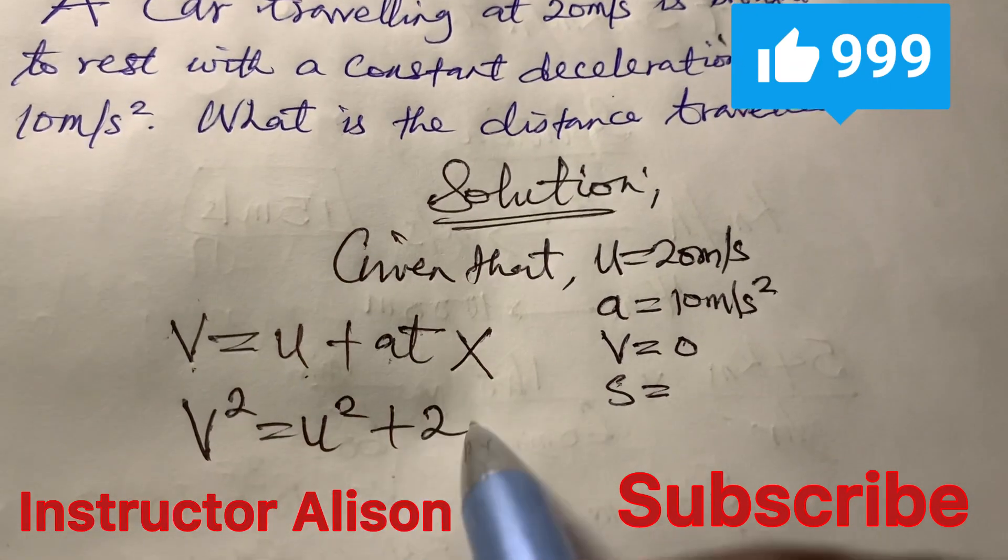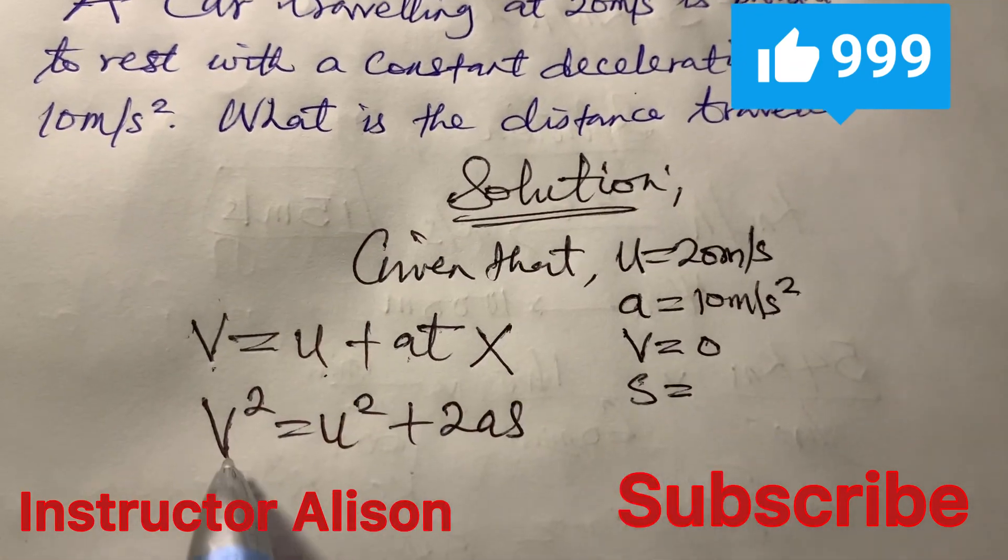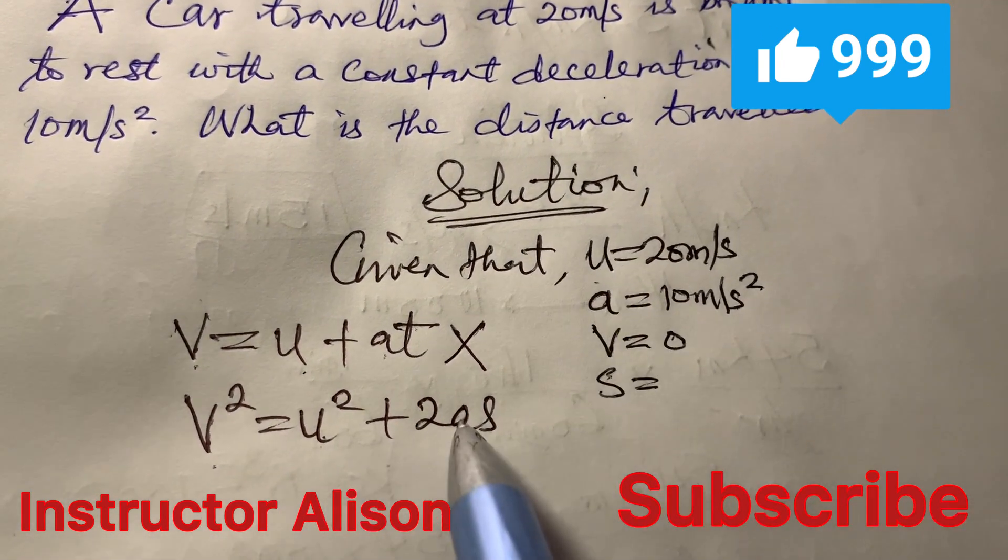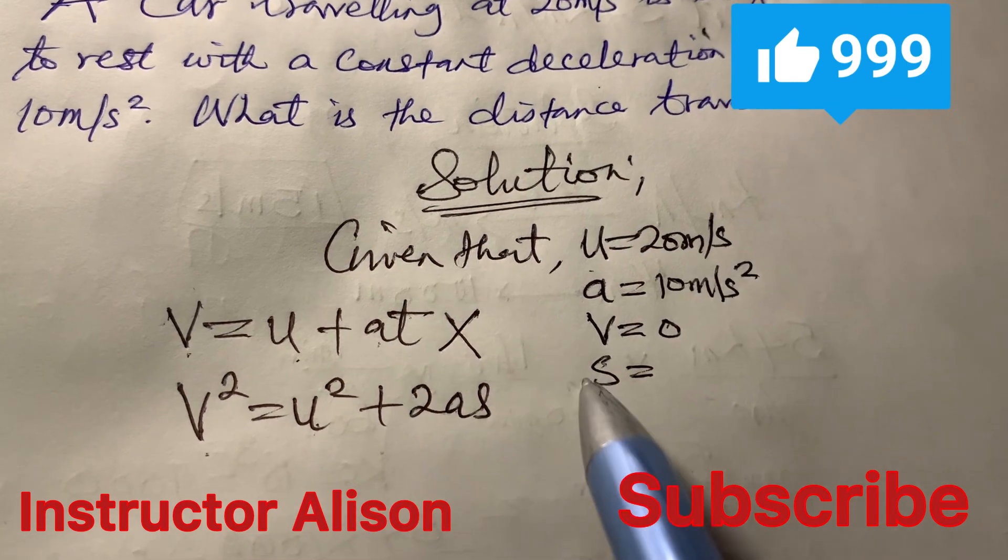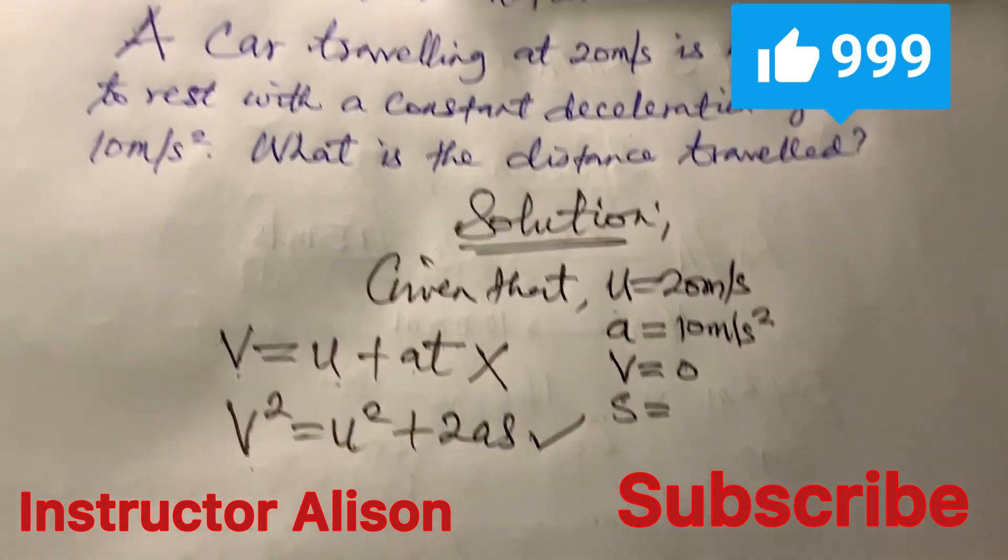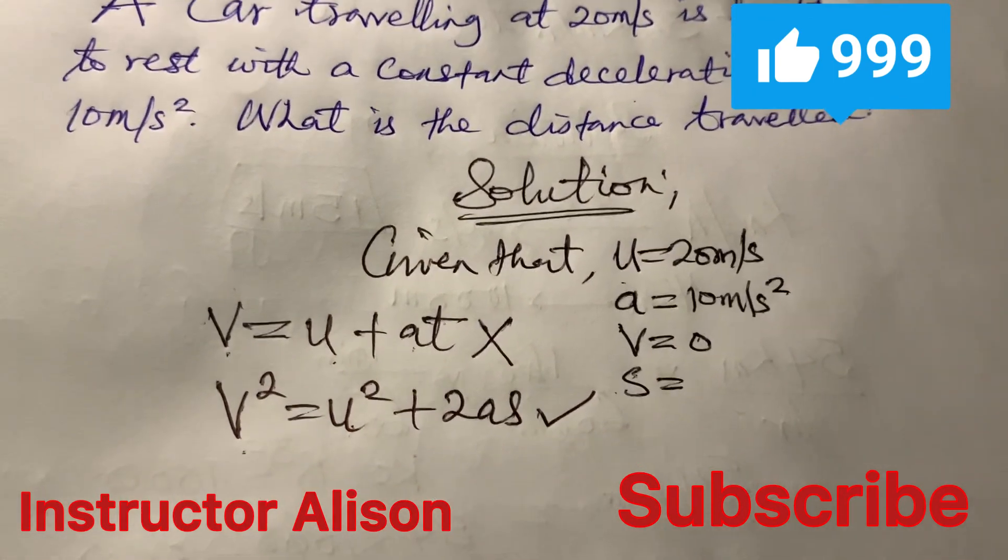We still have V squared equal to U squared plus 2AS. You can see that V is captured there, U is captured there, and also A is there. S is what you are looking for. This could be a good formula to use for this particular problem.